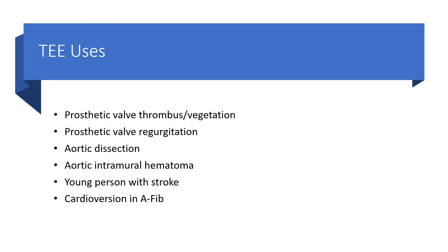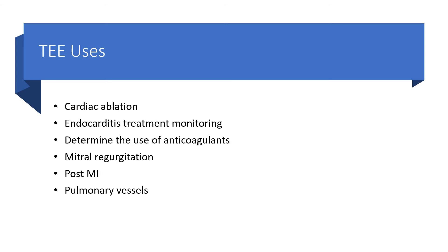If this is a young person with a history of stroke or cardiovascular events in the context of atrial fibrillation, go straight to TEE. Also go directly to TEE for cardiac ablation planning, monitoring endocarditis, determining use of anticoagulants, mitral regurgitation, post-myocardial infarction, and when you want to visualize the pulmonary veins.